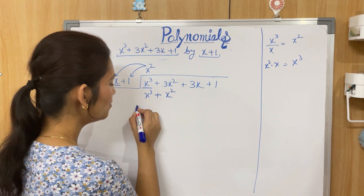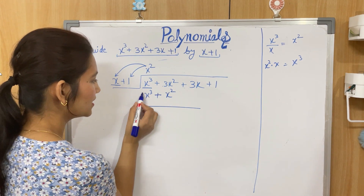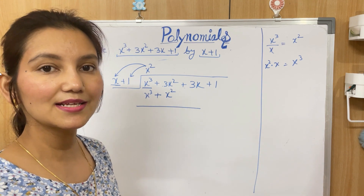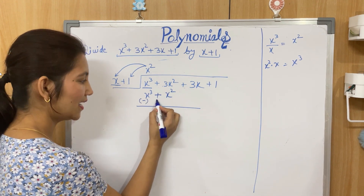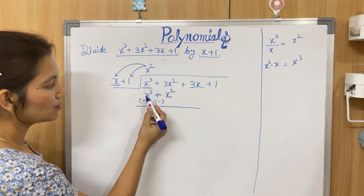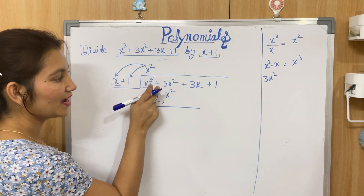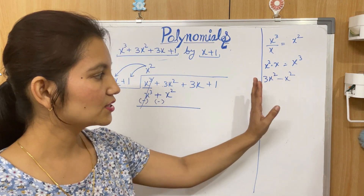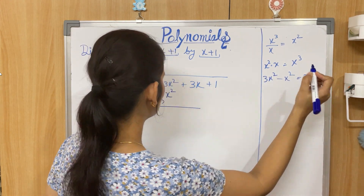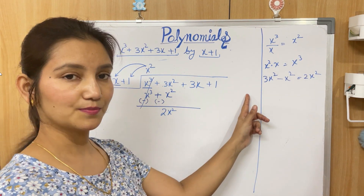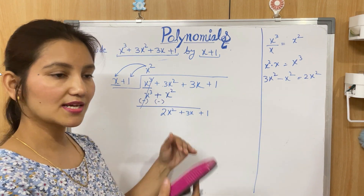Now reverse the signs of the terms below: plus x³ becomes minus x³, and plus x² becomes minus x². Then x³ minus x³ cancels out. For the x² terms: 3x² minus x² gives 2x². Bring down the remaining terms 3x + 1, so the new expression to divide is 2x² + 3x + 1.